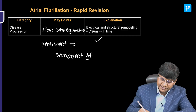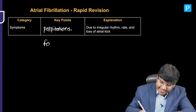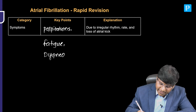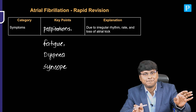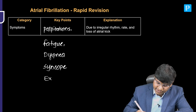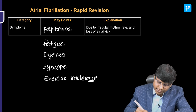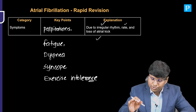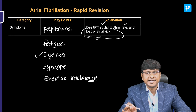The important symptomatologies include palpitations due to increased ventricular rate. Cardiac output is reduced, so the individual will have fatigue. The individual can go into pulmonary edema because of increased left atrial pressures, causing dyspnea. With AF with fast ventricular response, cerebral perfusion reduces, resulting in syncopal attacks. Exercise intolerance is also present. Due to loss of atrial kick, increased left atrial pressure causes pulmonary edema resulting in dyspnea.